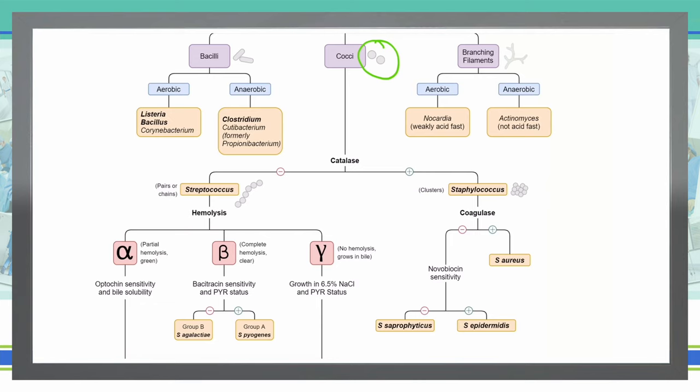What this catalase test is doing, it is testing for aerobic organisms that produce an enzyme called catalase. How we do this is by adding hydrogen peroxide into the solution with that bacteria, and if we get gas bubbles or oxygen being formed from that hydrogen peroxide, then we have that considered catalase positive. So adding hydrogen peroxide to staphylococcus will give us bubbles, making it catalase positive.